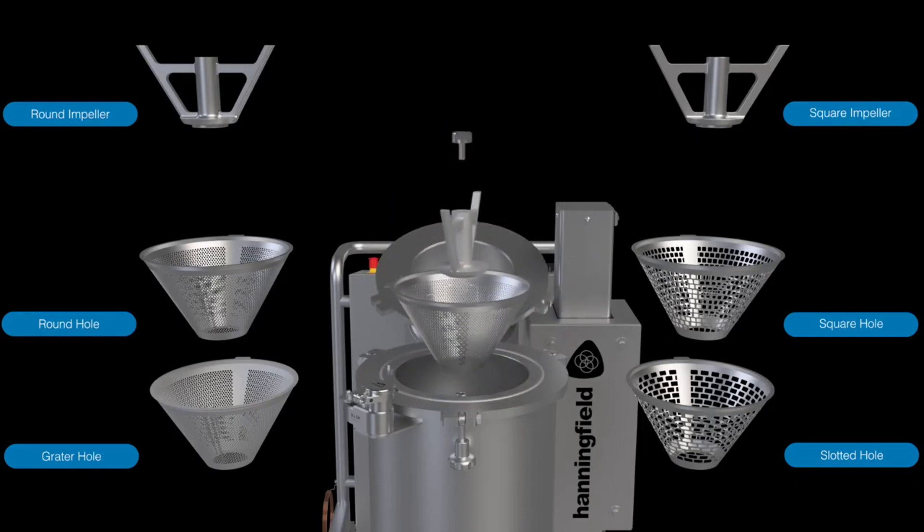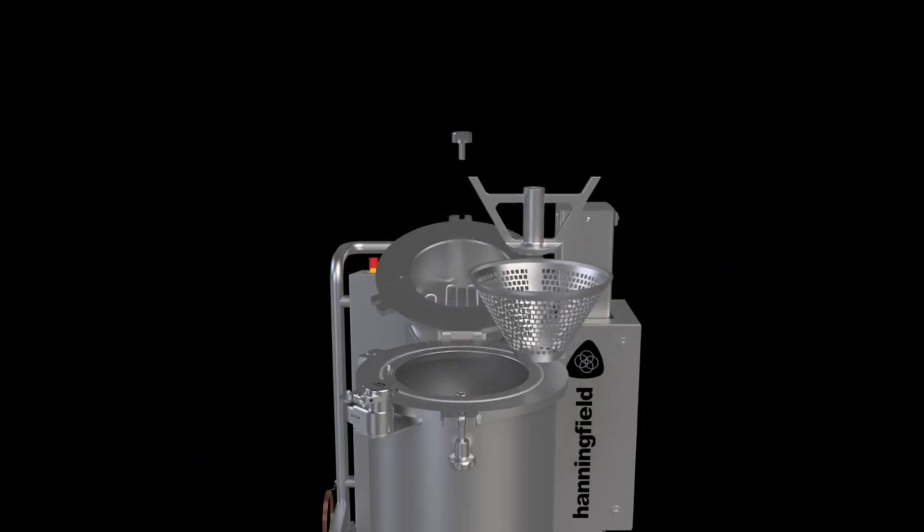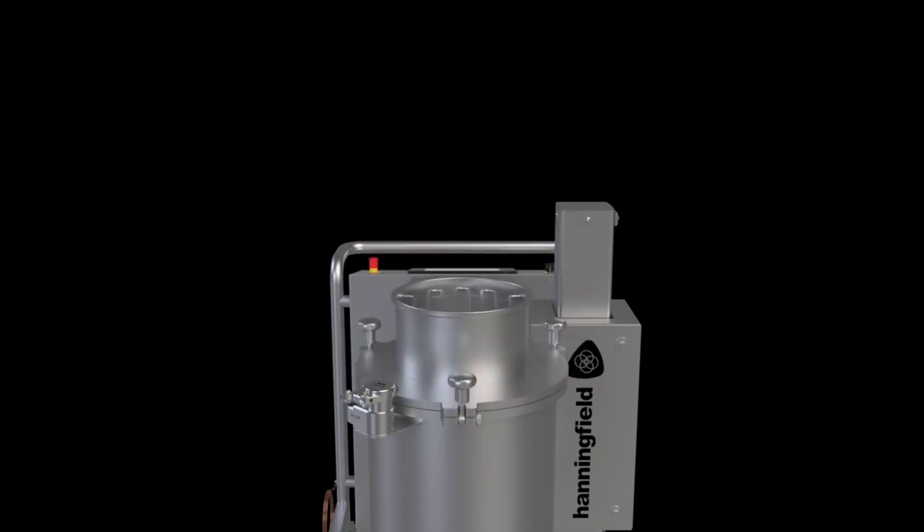Tooling changes are fast and easy. Switching from one screen or impeller to another takes under one minute and requires no spacers. This versatility makes the conical mill perfect for a wide variety of applications.